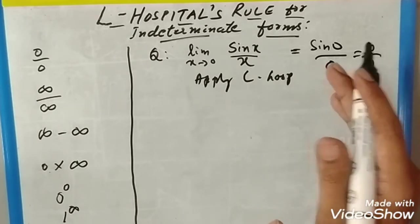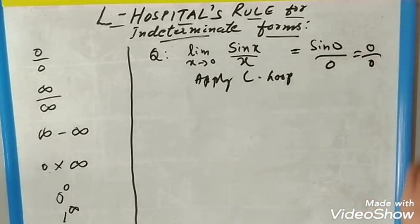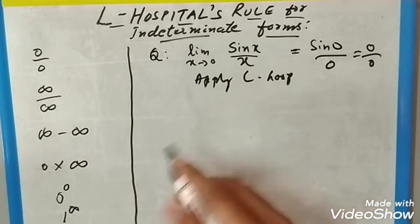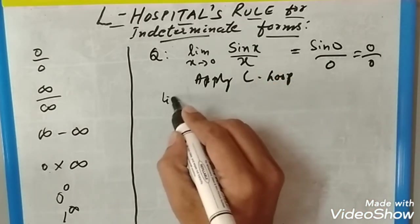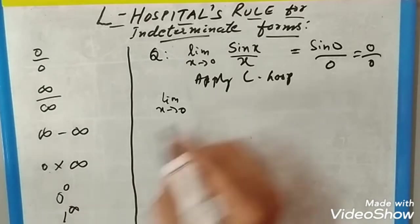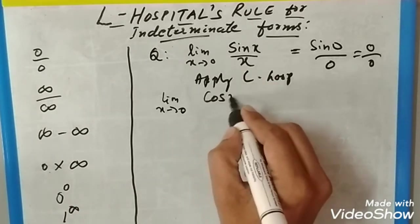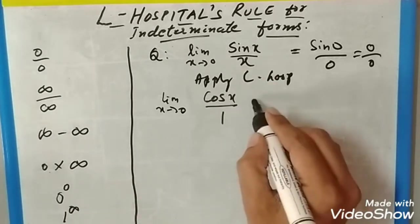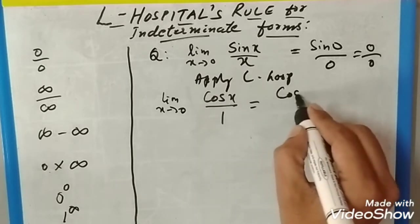You should differentiate numerator separately and denominator separately. The numerator is sin(x), limit x tends to 0. The differentiation of sin(x) is cos(x), and the derivative of x is 1. Now substitute the limit—it will be cos(0) divided by 1.